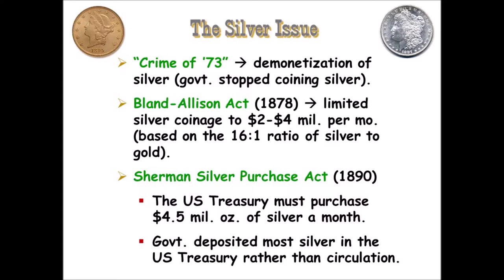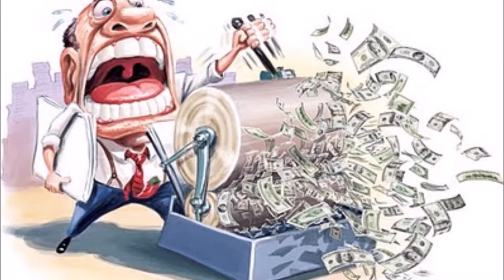The biggest issue to farmers was the silver issue. Once upon a time, our money was backed by gold and silver — it was called bimetallism. But in what we call the Crime of '73, in 1873, we demonetized silver, meaning the government stopped coining silver directly. Our money was now backed strictly on the gold standard. This puts less money in circulation, and in the minds of farmers, that means less money for them.